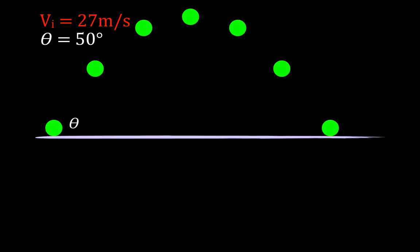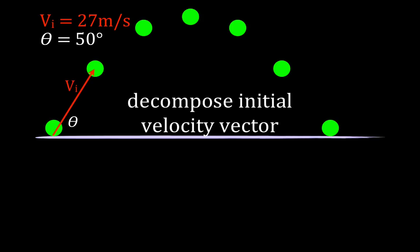Before we can do those three things, we have to do something else first: we have to decompose the initial velocity vector. The object is doing two things at the same time — it's moving with some initial velocity in the x direction, and it also has some initial velocity in the y direction. To answer our three questions, we need to know what is the initial velocity in the x direction and what is the initial velocity in the y direction. So we're going to decompose this vector into its x and y components.